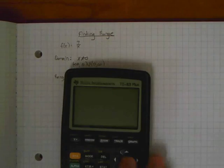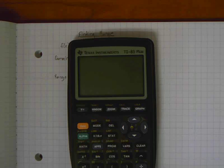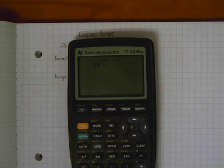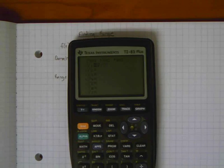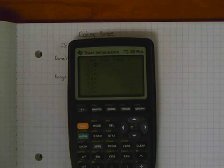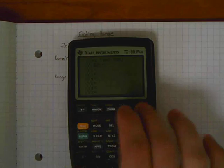So I'm going to bring out my graphing calculator here. Turn it on and go to my y equals. And you can see I've already got it typed in there, y equals 7 over x. So I'm going to look at the graph.